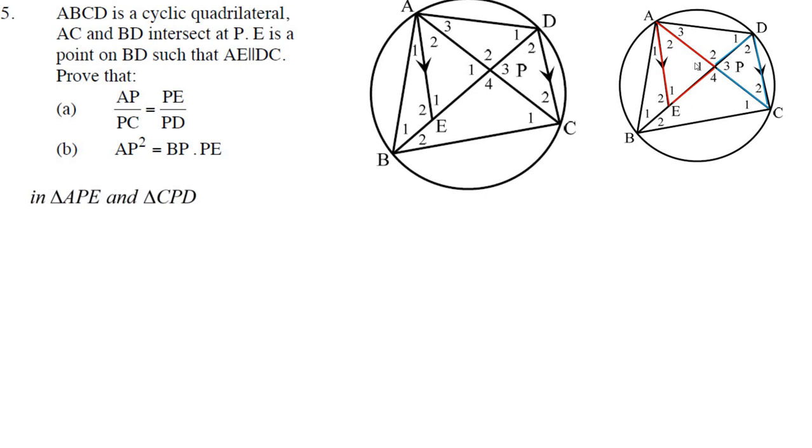So I mark it out. I know I'm looking at this red triangle because I'm looking at the letters AP and PE. And the other letters in there, you've got PD, and the other letter there is PC. So that's the blue triangle it must be.